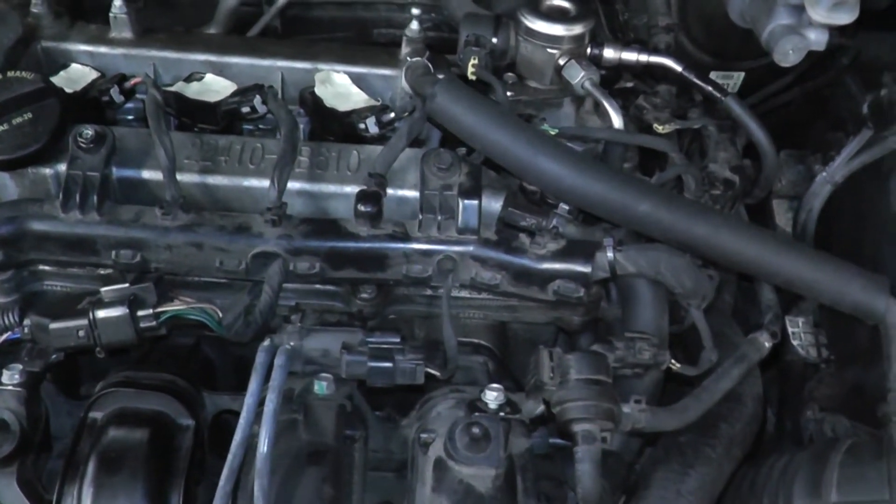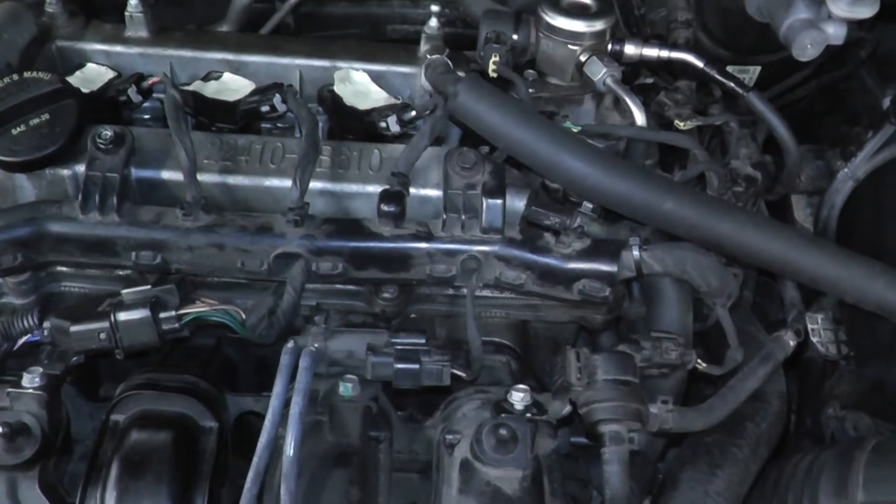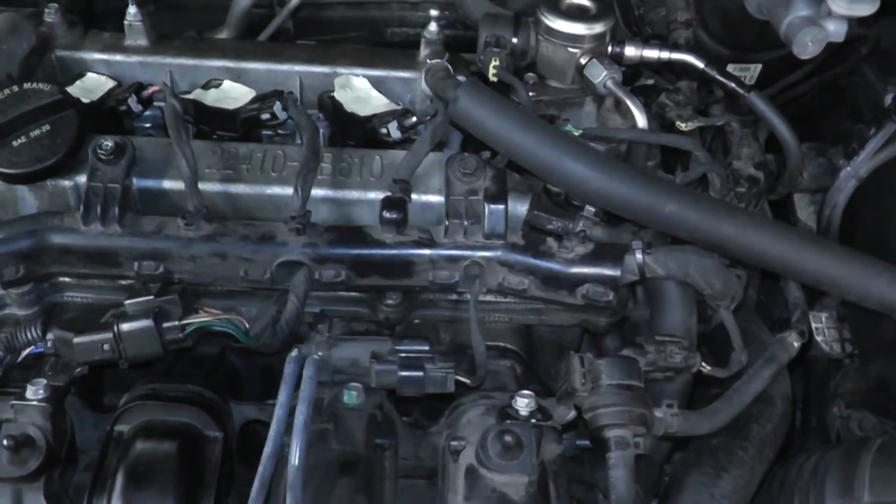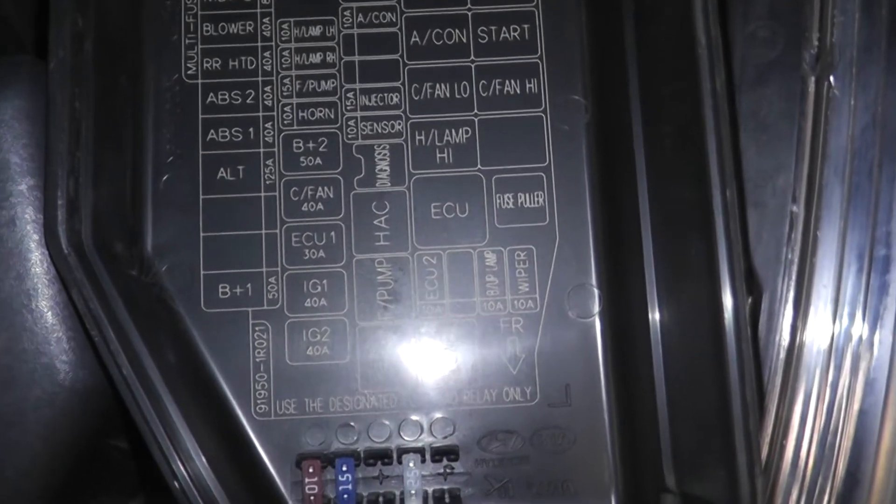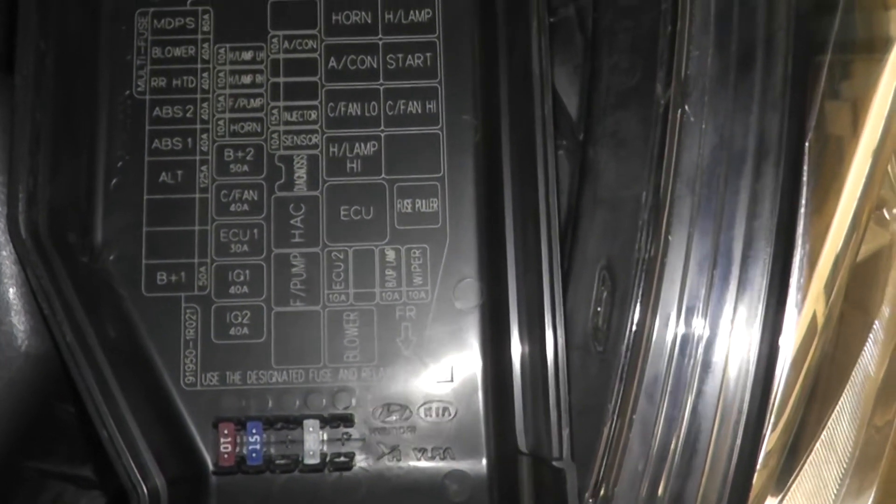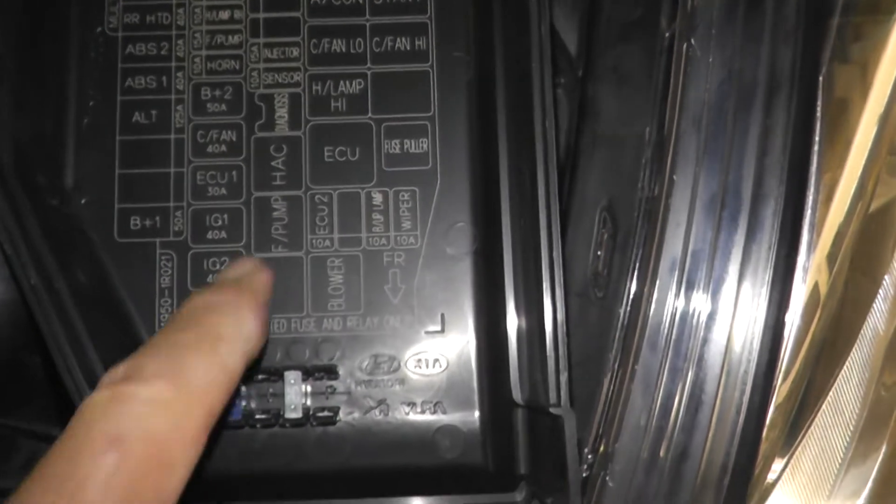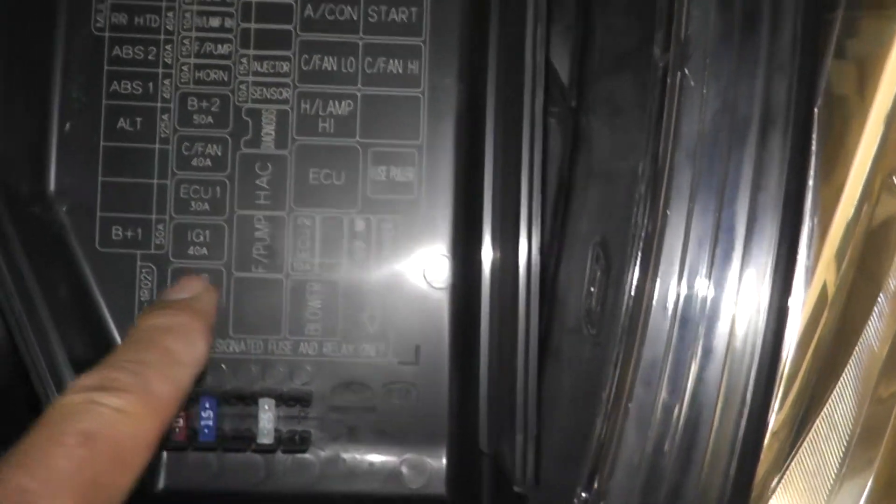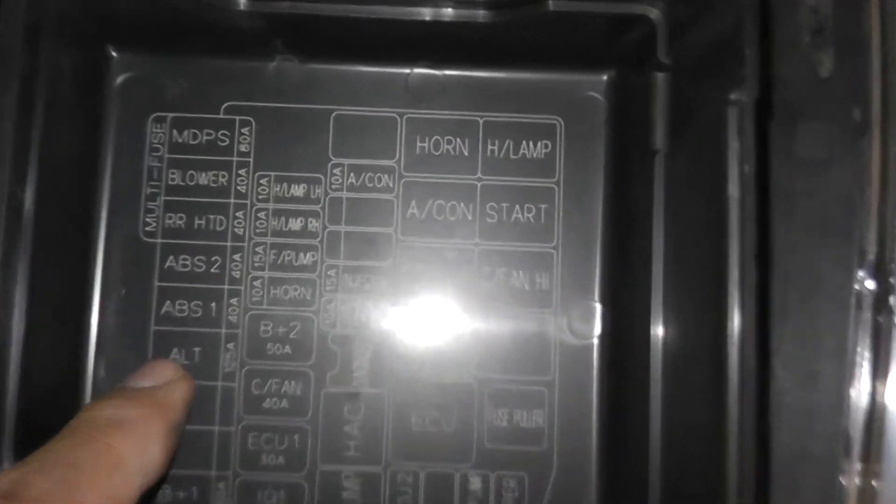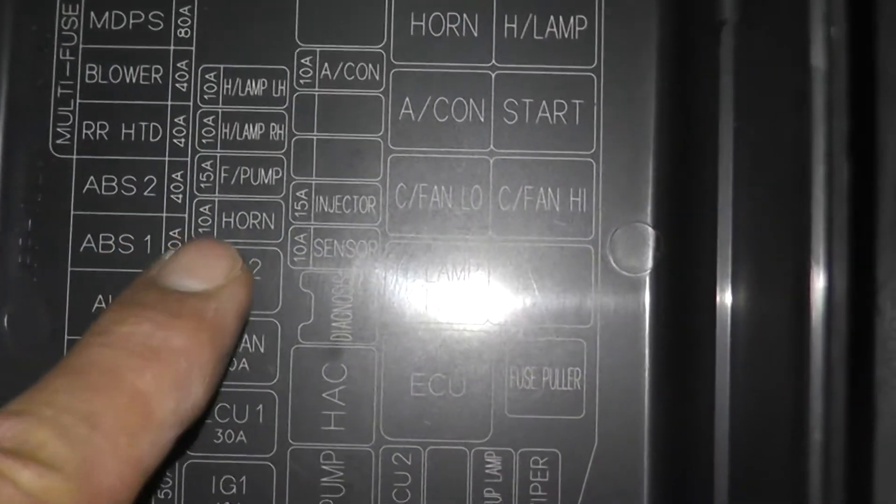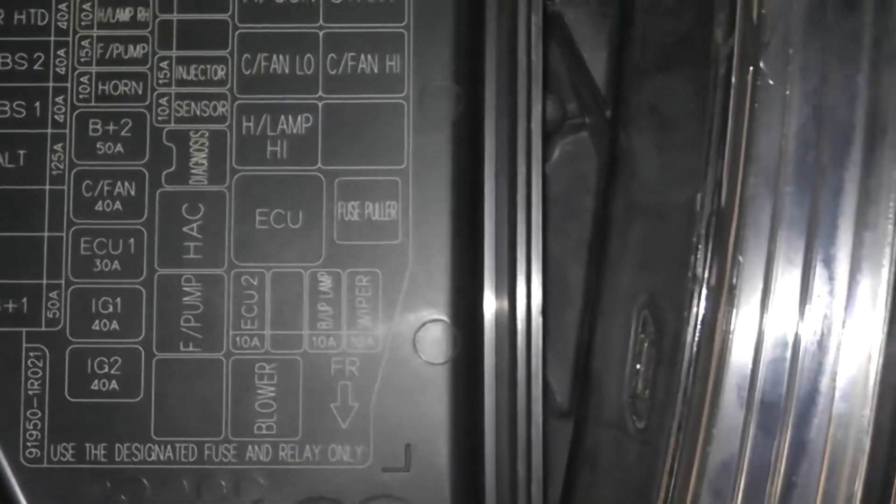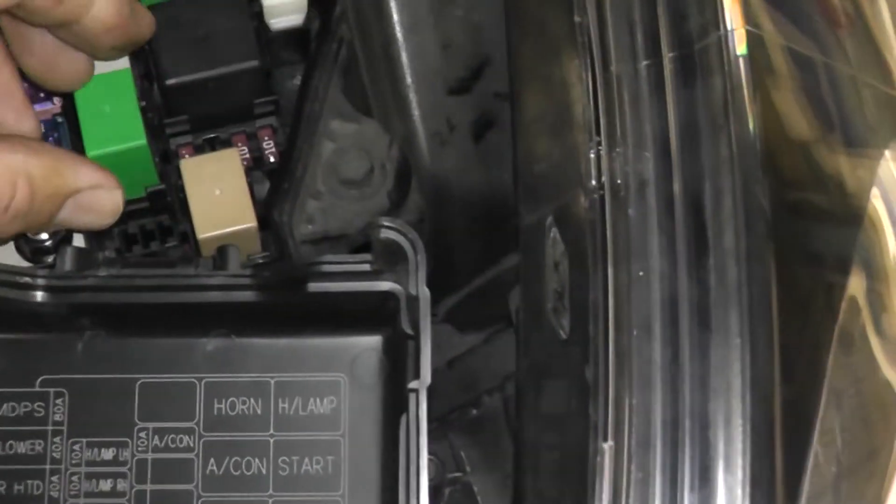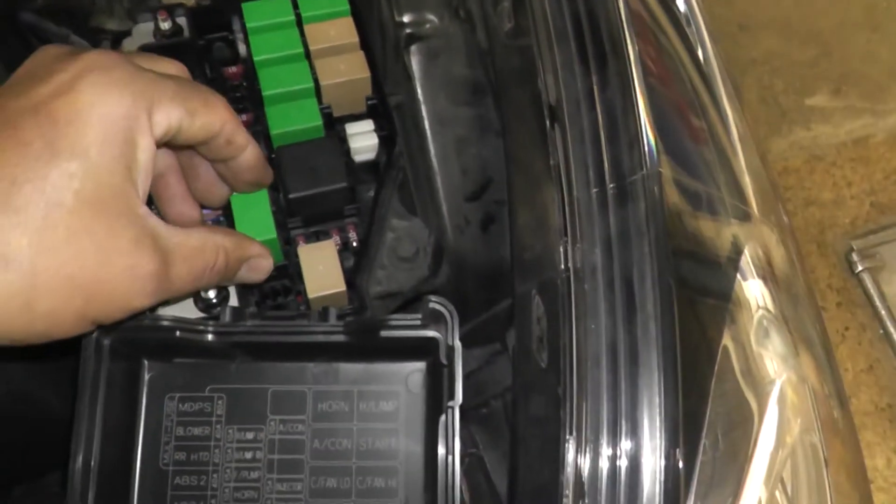Before we start our compression test, we have to do a couple of things. One is we have to disconnect the spark, and one is we have to disconnect the fuel. To disconnect the fuel, if you go to the fuse box and if you look for a fuse or a relay that controls fuel pump or injectors, in this case, we have a fuel pump relay. We also have fuel pump fuses. So we could take the fuel pump fuse out or we can remove the relay, whatever is easier for you. In this case, we will take the fuel pump relay out.